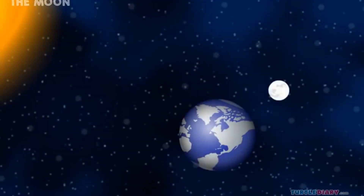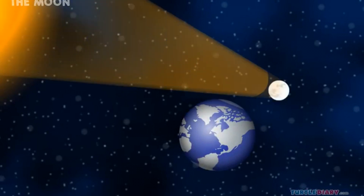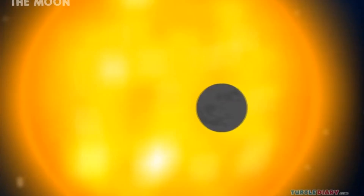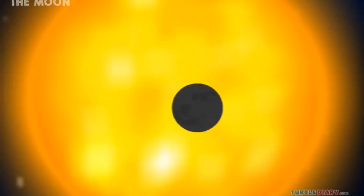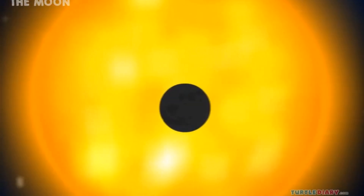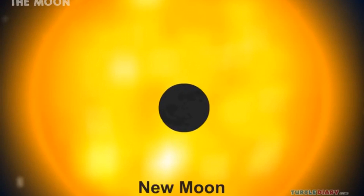Remember that the moon only reflects the light of the sun. So, when the sun is behind the moon, we can't see it at all. We call this a new moon. The night is very dark.